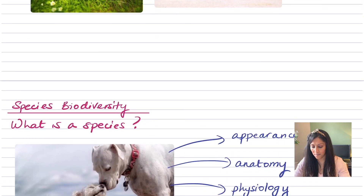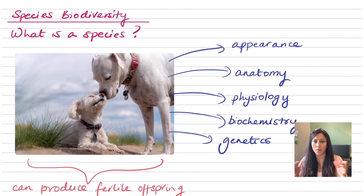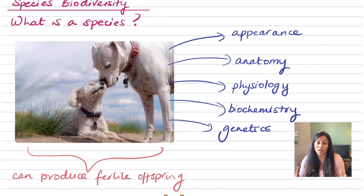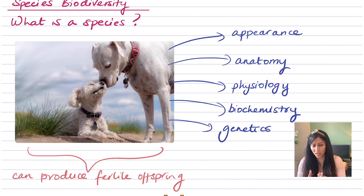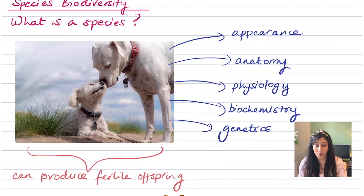Another thing we can look at is species biodiversity. Before we go into what species biodiversity is, what does it mean when I say a species? When you look at a species, generally they look very similar — similar anatomy, the physiology might be the same, the genetics and biochemistry are all very similar. But how do we really define what a species is? They must be able to produce fertile offspring.